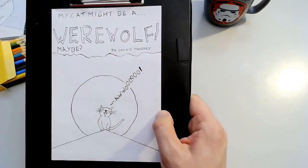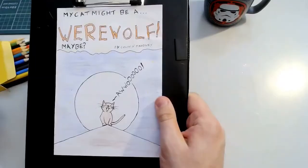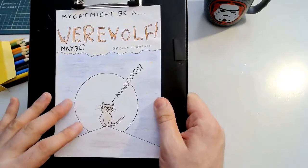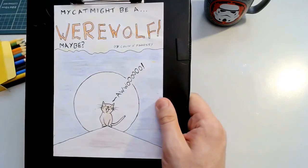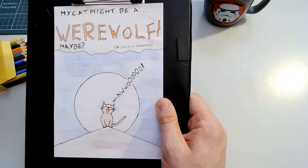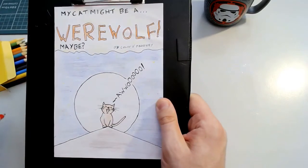And then once you've colored in your cover, again, I like to keep it nice and simple. I use the brightest color for the cat and for the spooky font. And you're done. Your comic is completely finished.